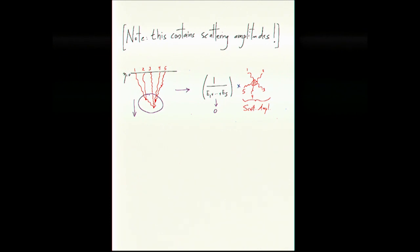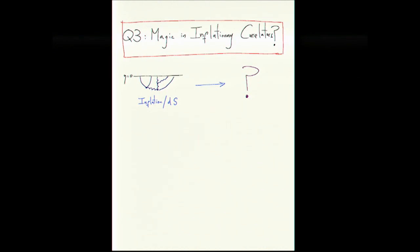So that's the first warmup case, even for planar N equals four super Yang-Mills. Next, we can ask whether there is analogous magic. Now, in honest cosmology, if we have gravity, non-conformally coupled fields, massive particles, but again, that's the same basic strategy, start computing these things in perturbation theory,